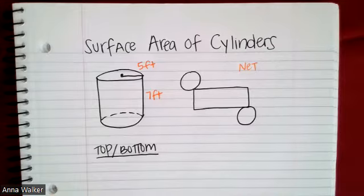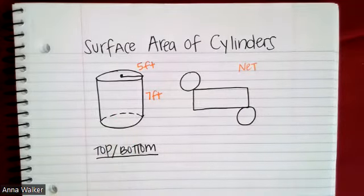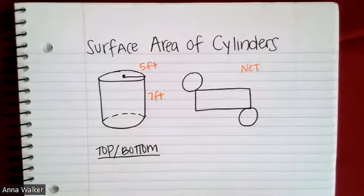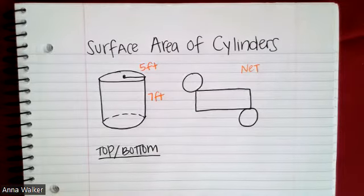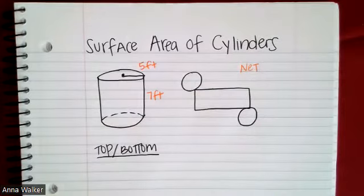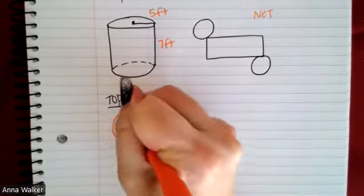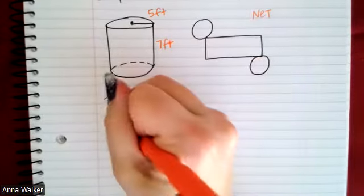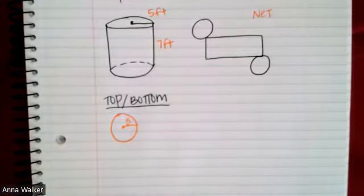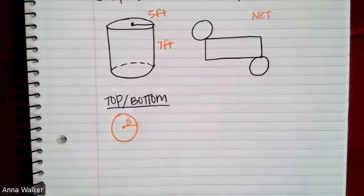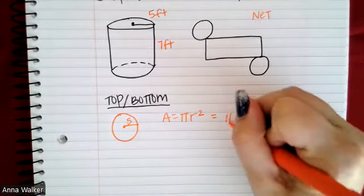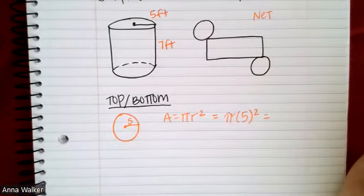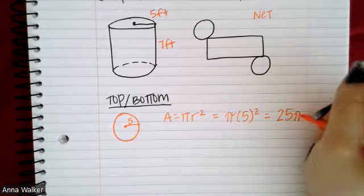The first thing we're going to do is find the area of the top and bottom, because these two circles should be the same size. In our example, we have a circle with a radius of five. To find the area of this circle, we use the formula: area equals pi times r squared. So that's pi times five squared, and five squared is 25, giving us 25 pi.